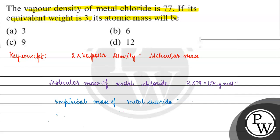Empirical mass of metal chloride will be equals to equivalent weight of metal, which is given as 3, plus 35.5, which is the equivalent weight of chlorine. This equals 38.5 gram per equivalent.